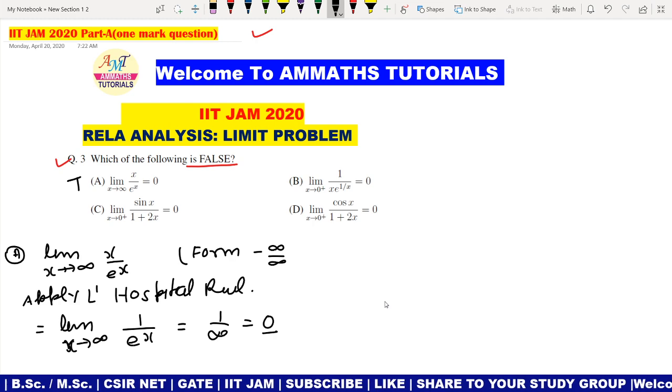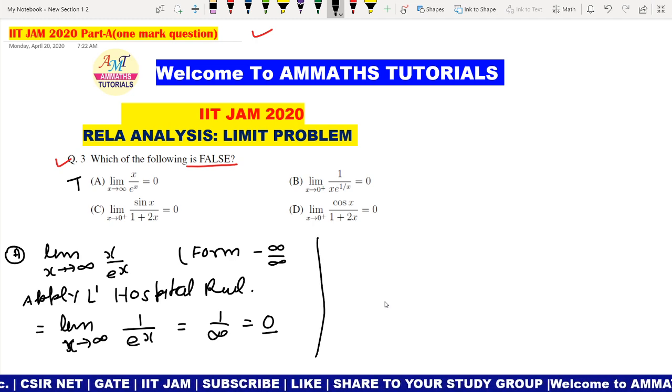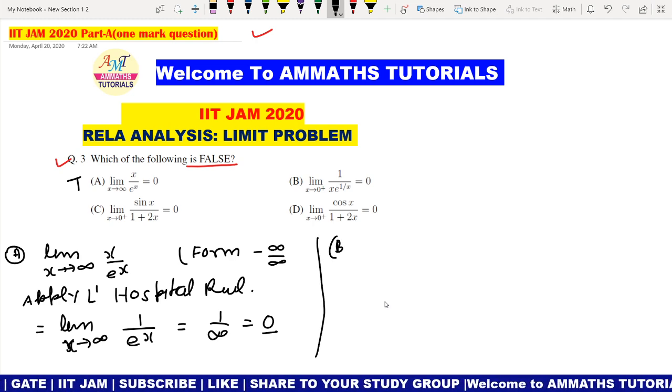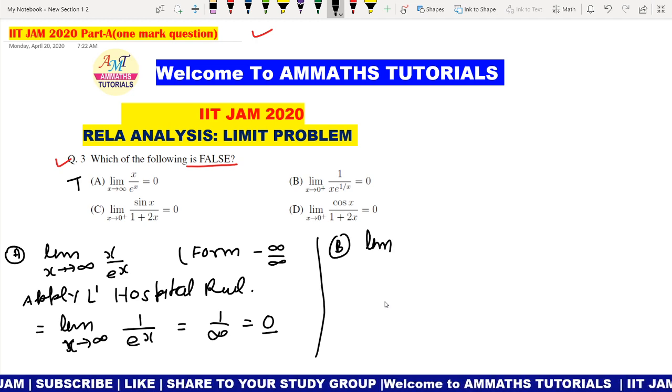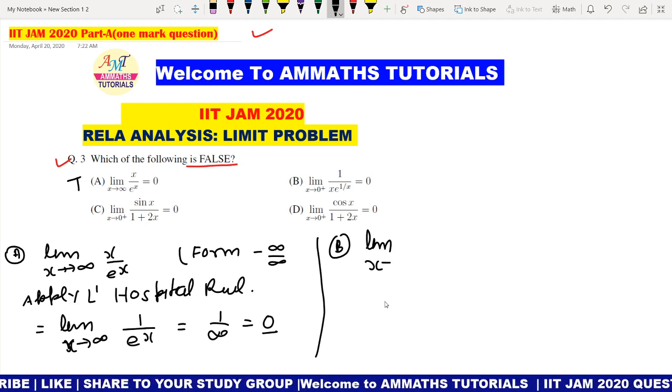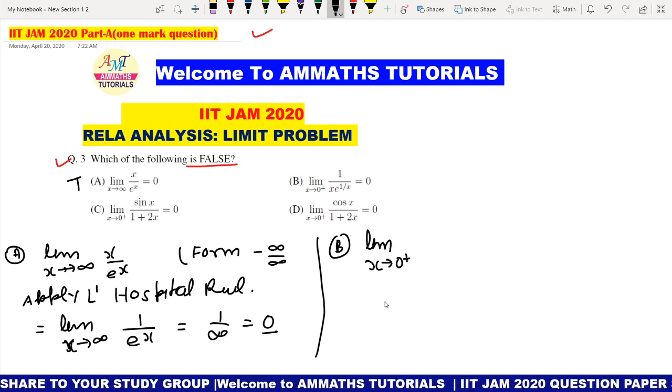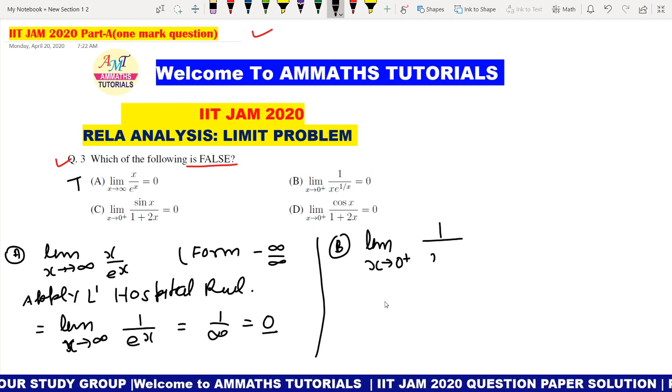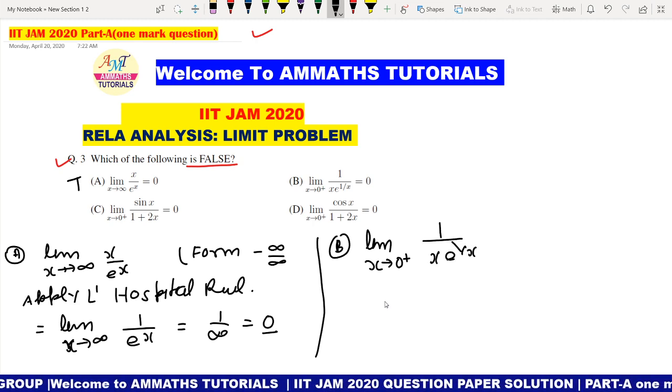This is false. Now come to the other one, B portion. Limit x tending to 0 plus, and xe power x.